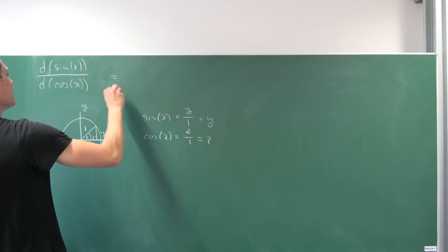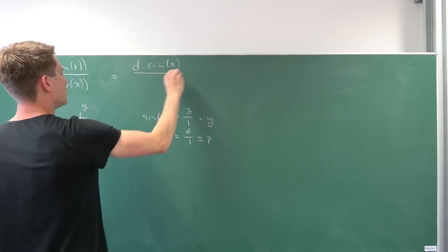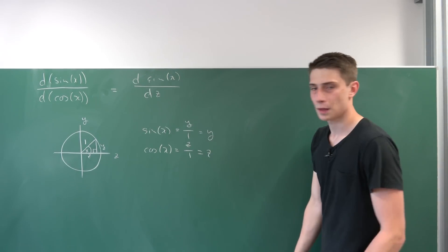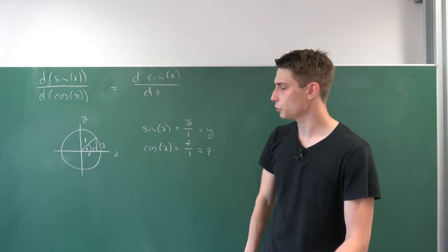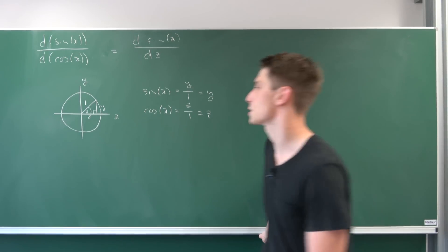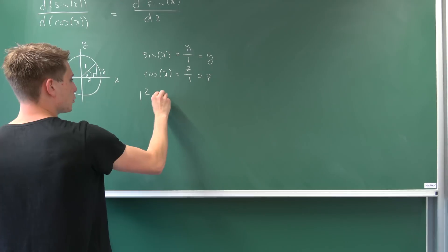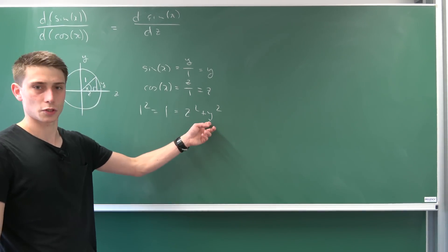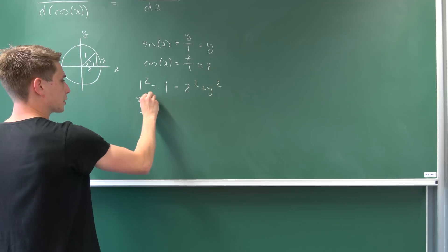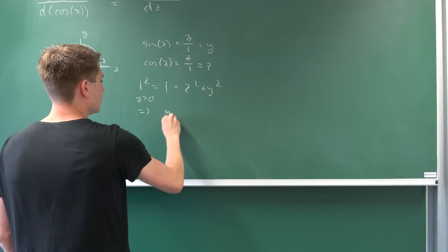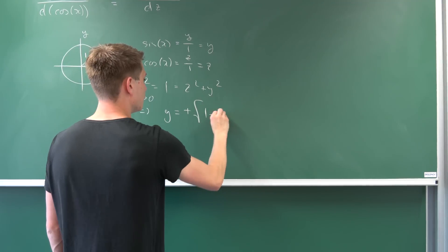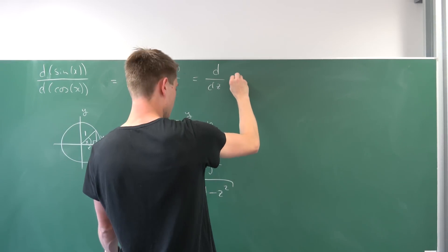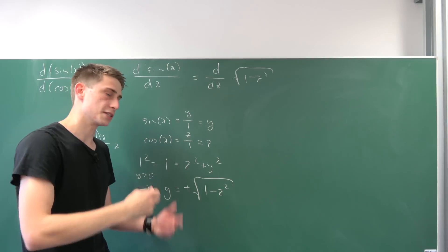So the first step is we can say we now have d(sin x) differentiated with respect to our cosine, which is z. Now we want to express sine in terms of z. That's quite easy, because we have Pythagoras, which tells us that 1 squared equals z squared plus y squared. Solving for y, with y strictly greater than 0, y is nothing but the positive square root of 1 minus z squared. And we can plug this in, so we end up with d/dz of √(1 − z²).